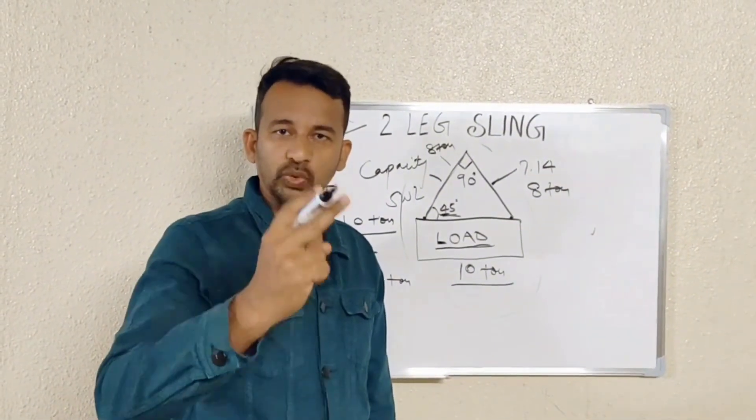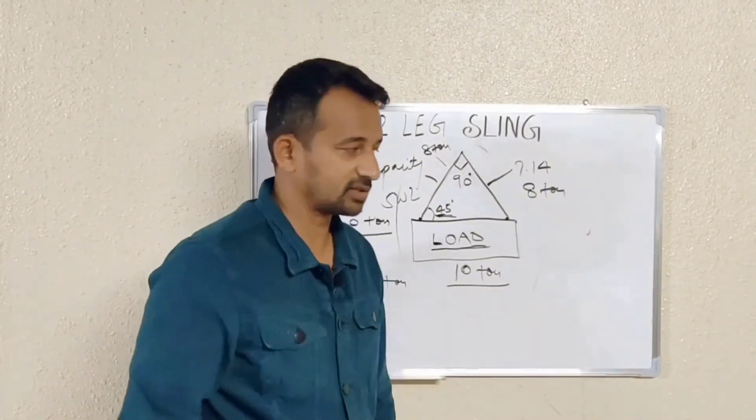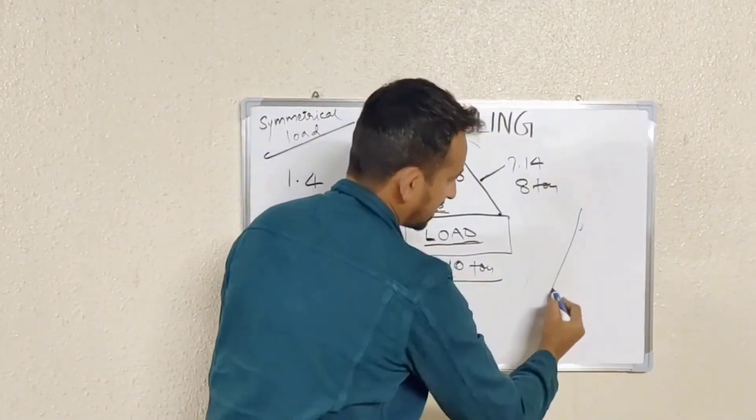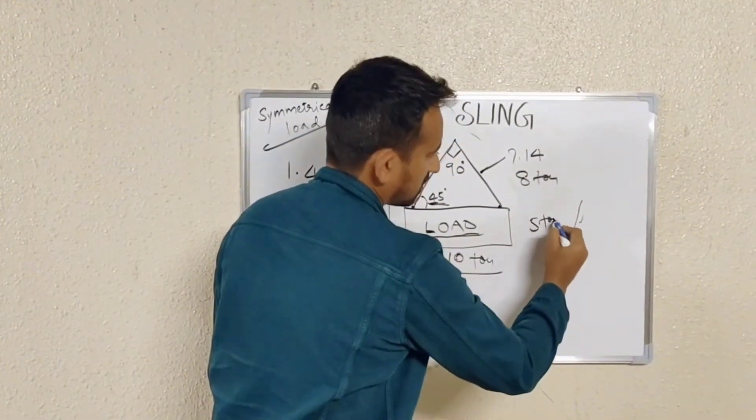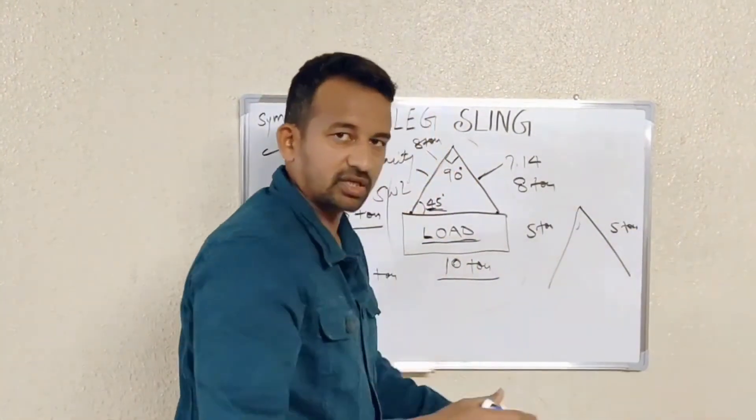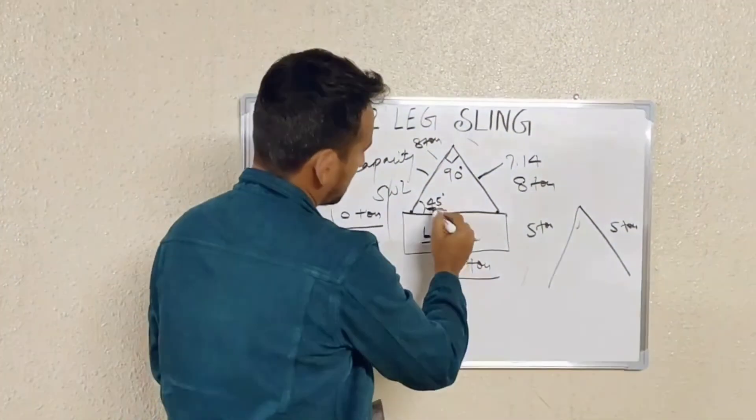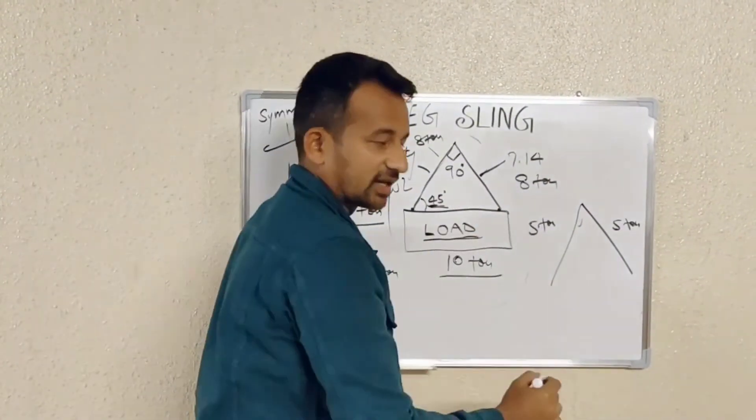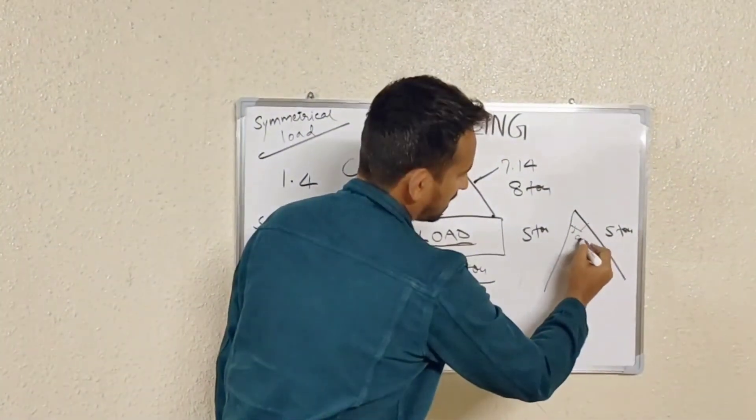Conversely, you have two slings of 5 ton capacity. So you have one sling 5 ton and other sling 5 ton. And you are using it the same way, like maintaining the 45 degree sling angle, which is say 90 degree included angle here.